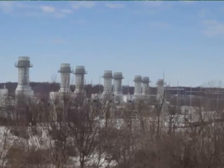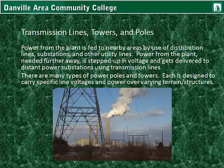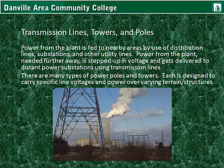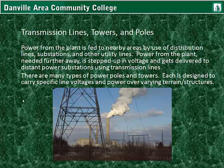Here there are multiple peaking generators, transmission lines, towers, and poles. Power from the plant is fed to nearby areas by use of distribution lines, substations, and other utility lines. Power from the plant needed further away is stepped up in voltage and gets delivered to distant power substations using transmission lines. There are many types of power poles and towers, each designed to carry specific line voltages and power over varying terrain or structures.